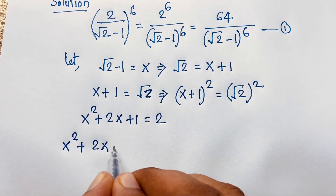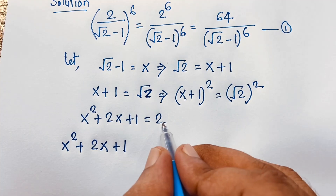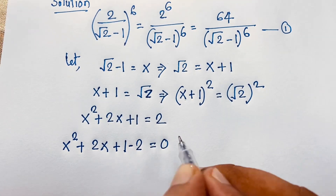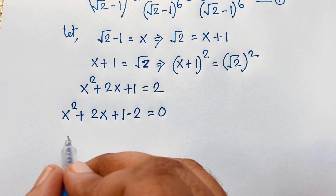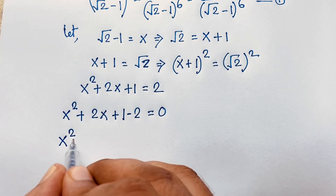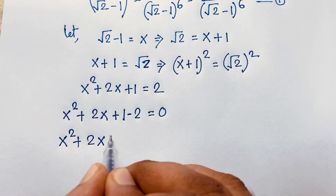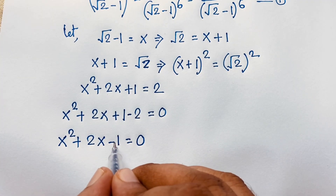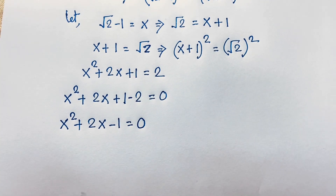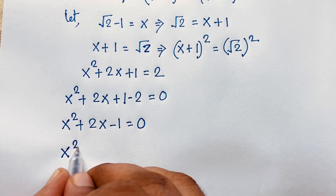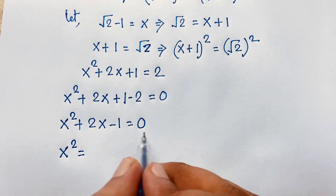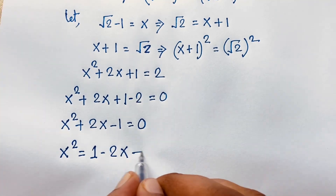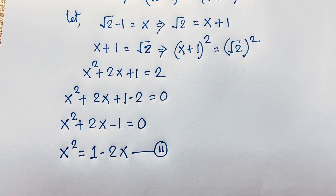Then x² plus 2x plus 1, moving the 2 to this side gives x² plus 2x minus 1 equals 0. Therefore x² equals 1 minus 2x. This is our second equation.